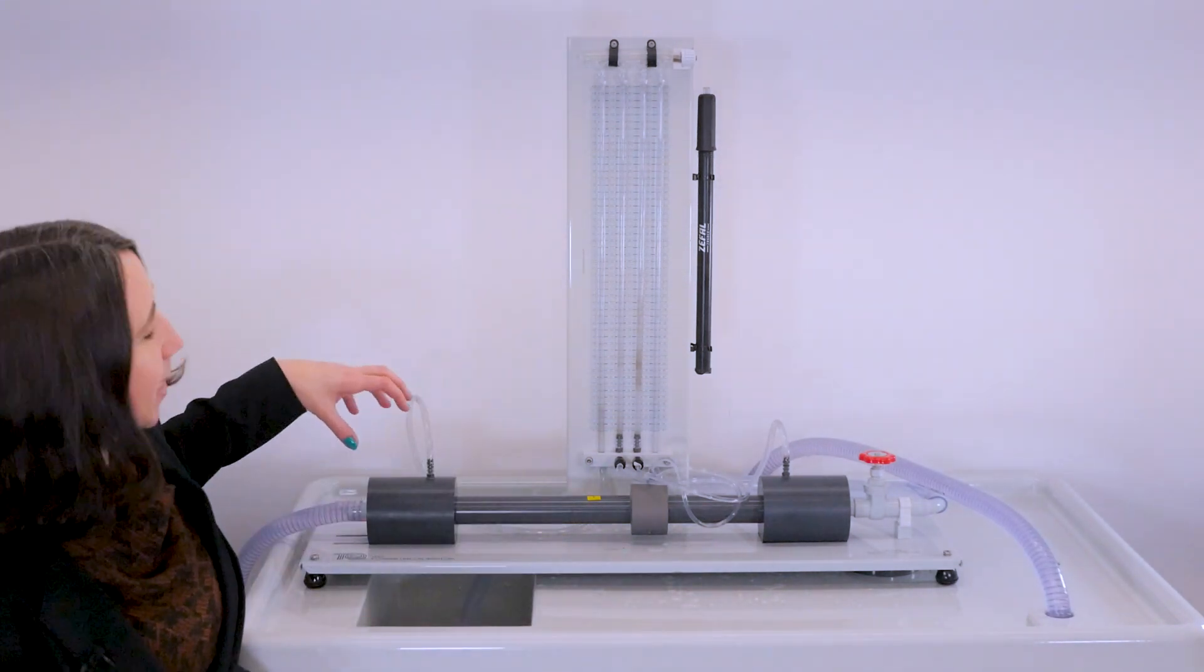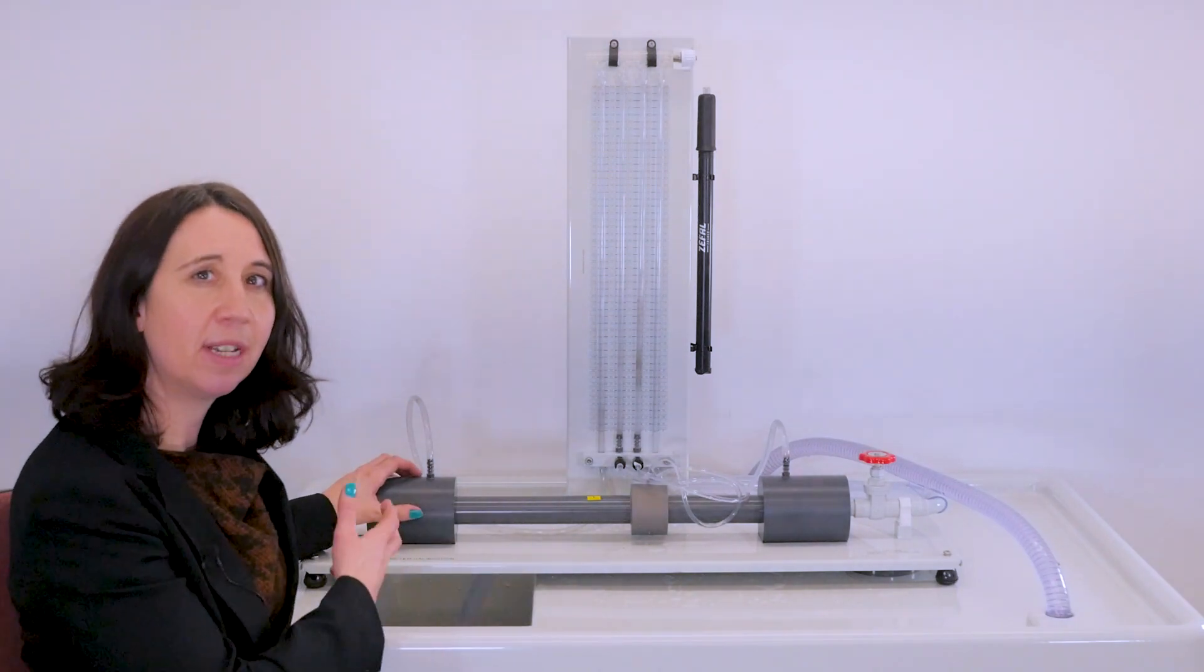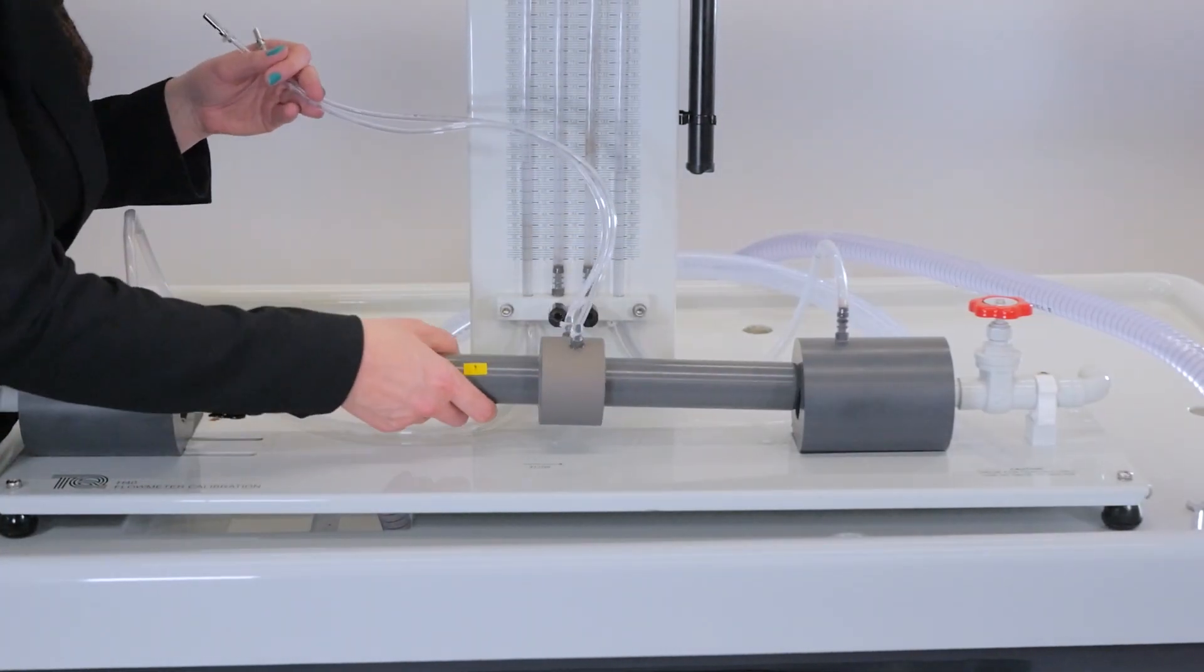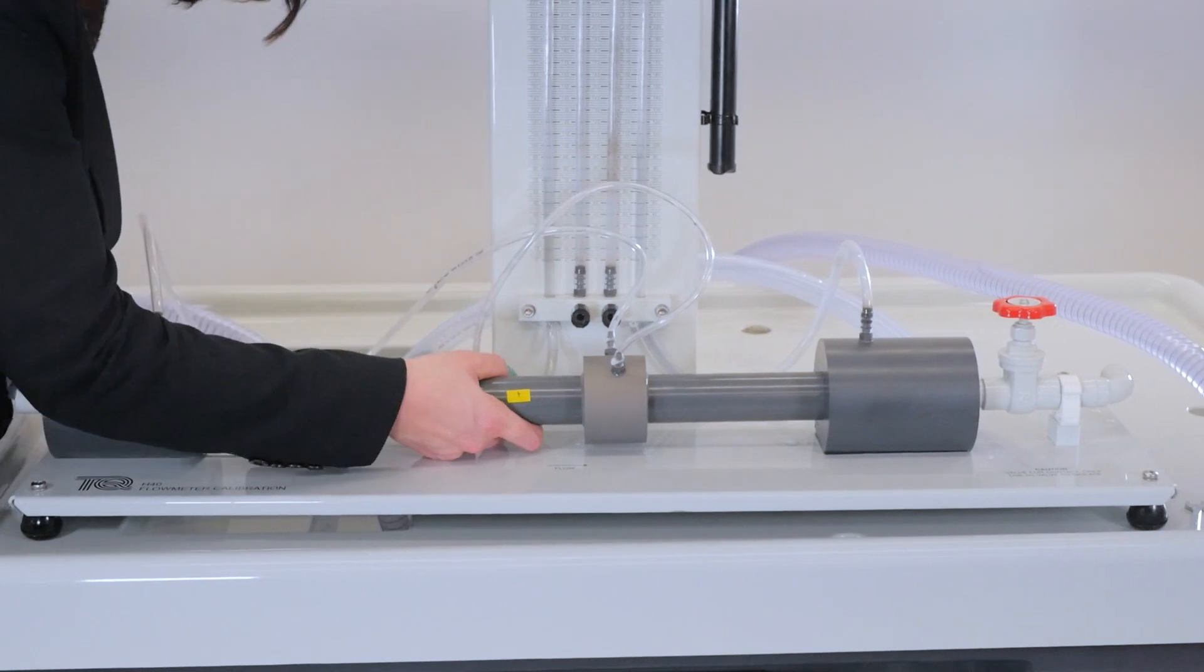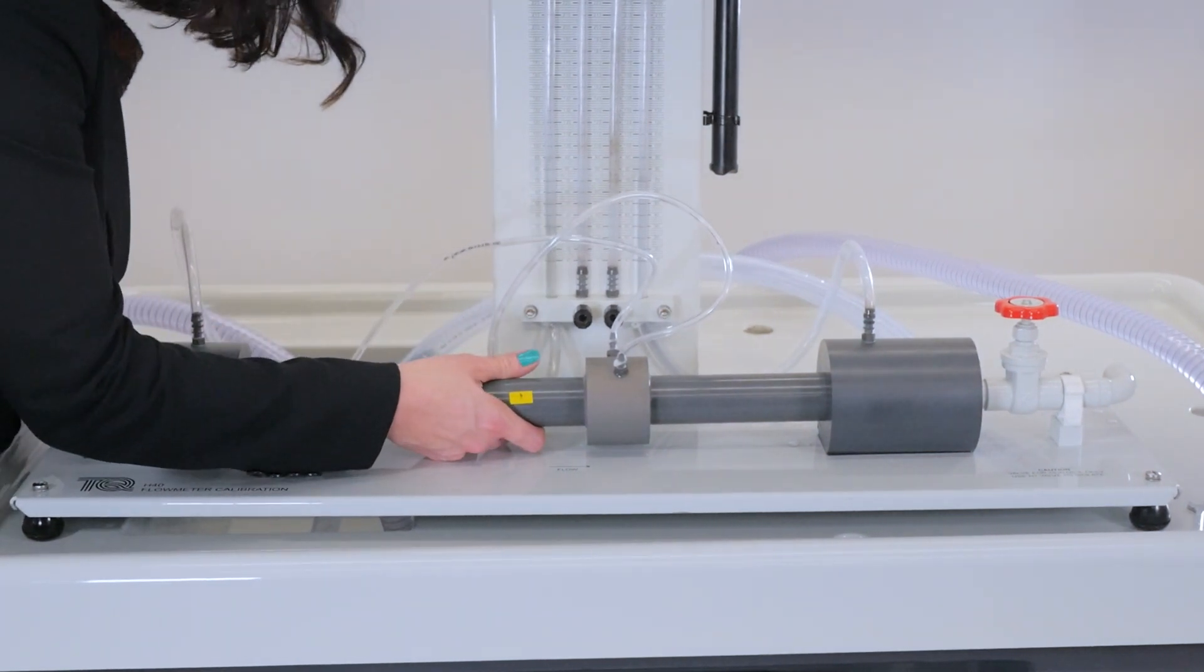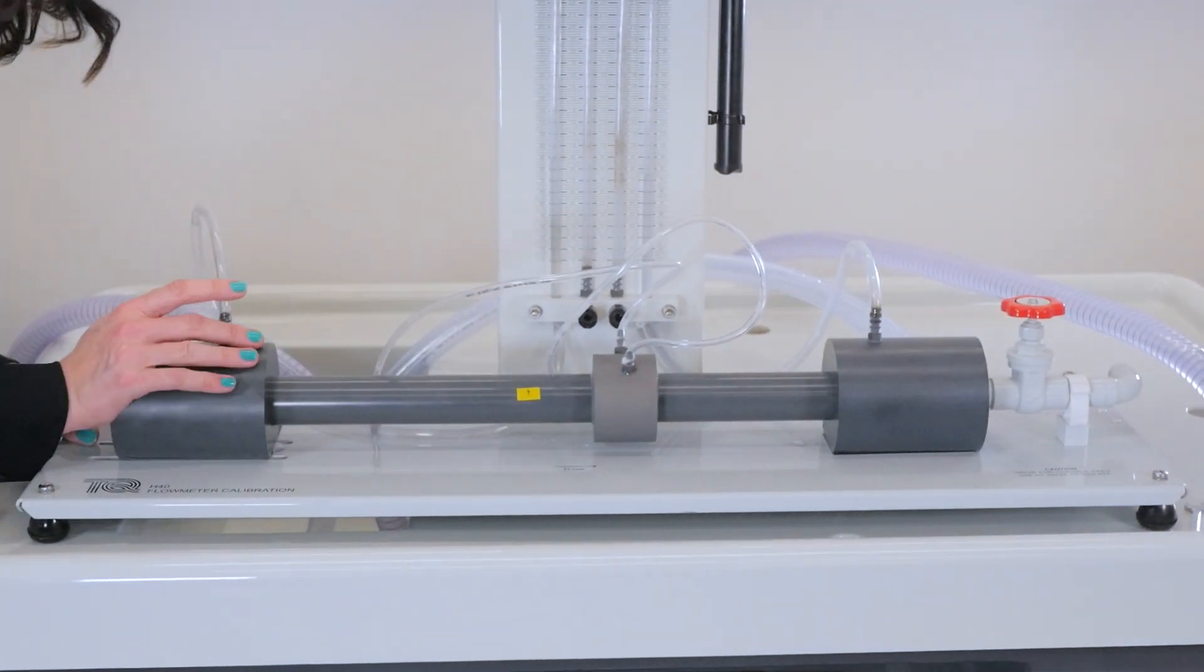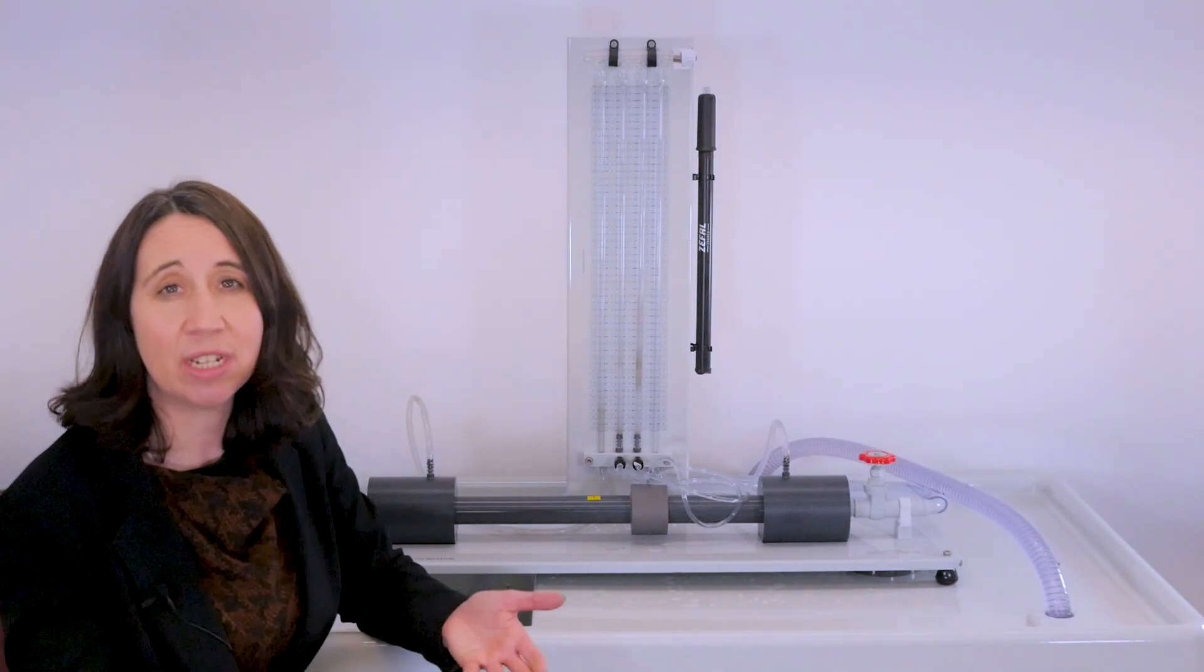These chunky sections on either side of the connector blocks allow you to easily switch over different types of flow meter by sliding them into place. As you can see, it's simple, and the sockets and seals ensure there is a tight fit for no leakages.